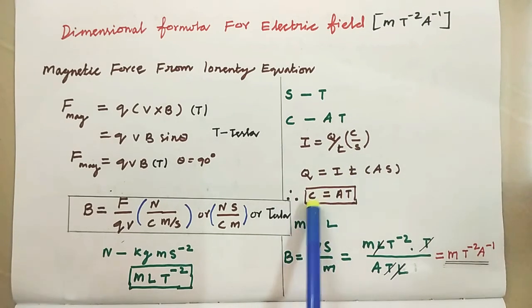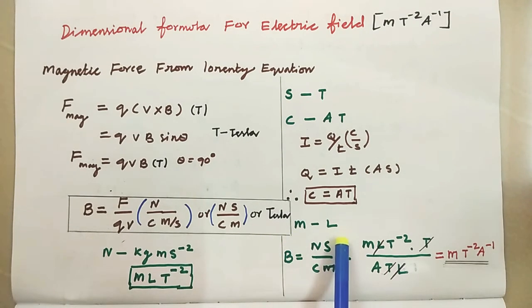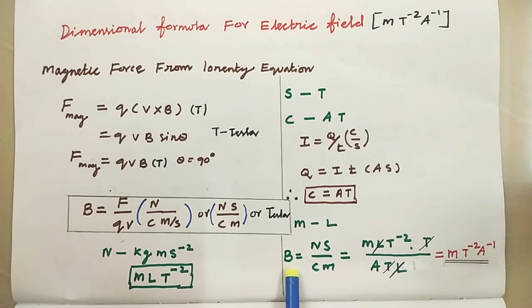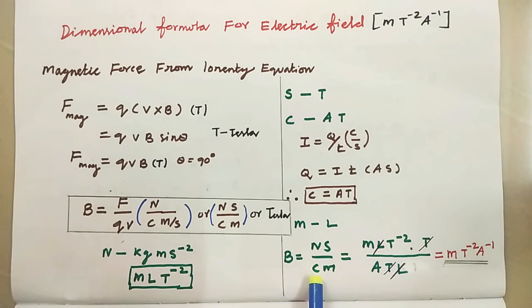So, a coulomb, we can write as A, T. Okay. So, meter is L. Therefore, magnetic field is equal to Newton second per coulomb meter.